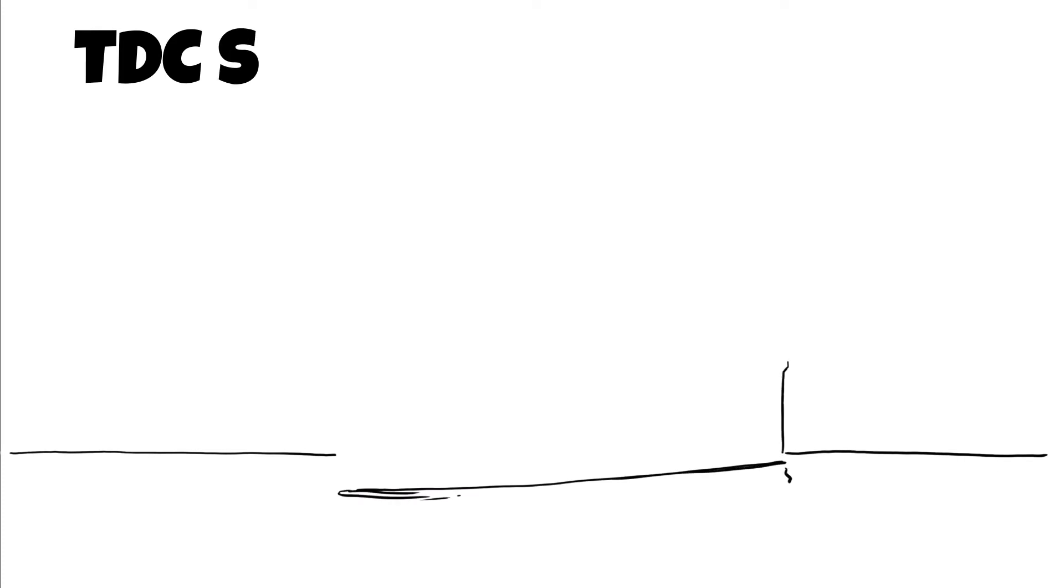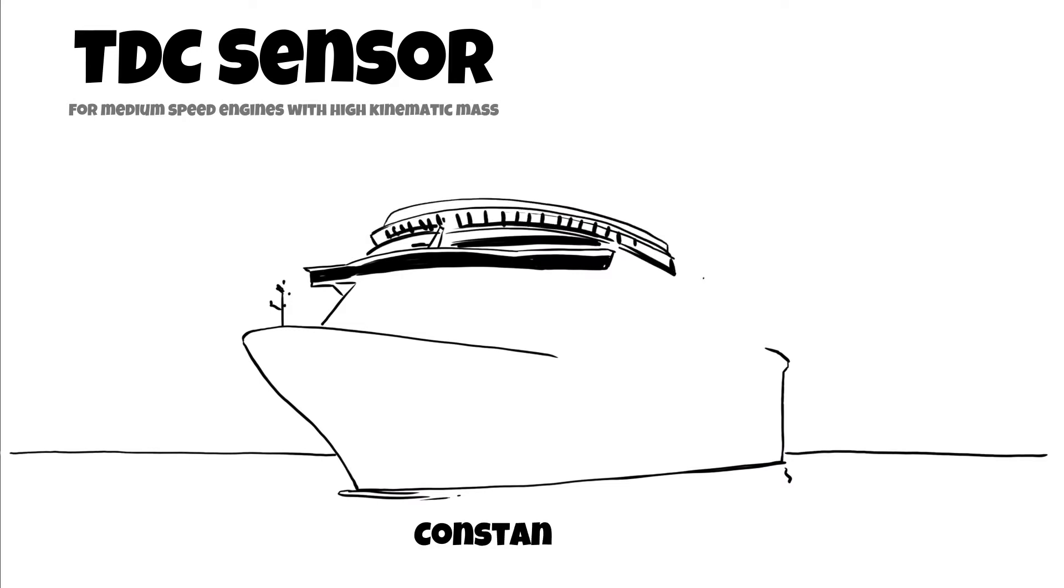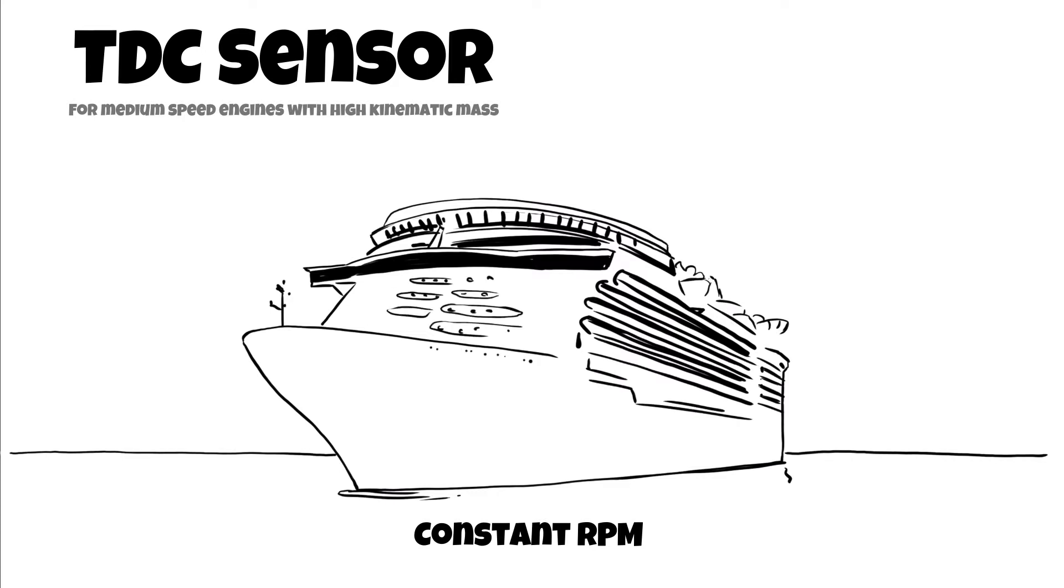On ships which have medium speed diesel engines only, the velocity of the crankshaft is constant. This is due to the higher kinematic mass from the generator and the higher speed of the engine. On those ships, all engines would need to be equipped with a single TDC sensor.